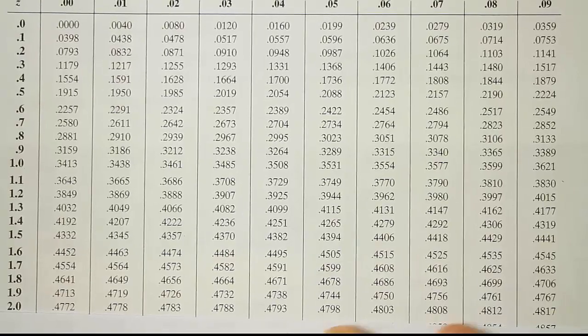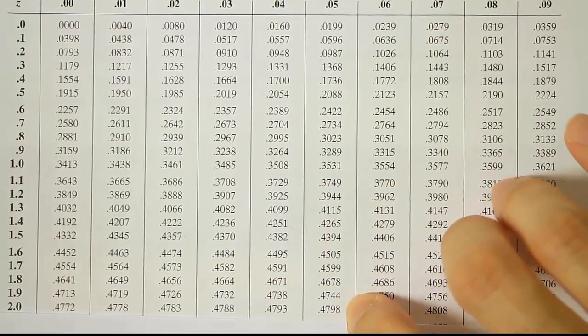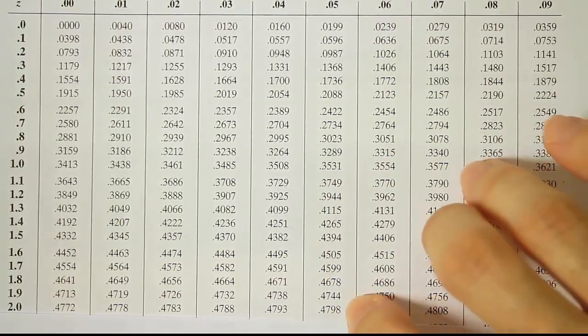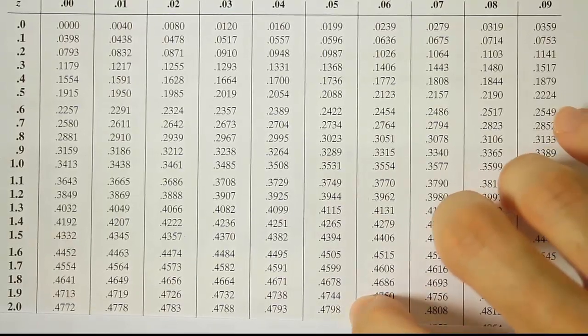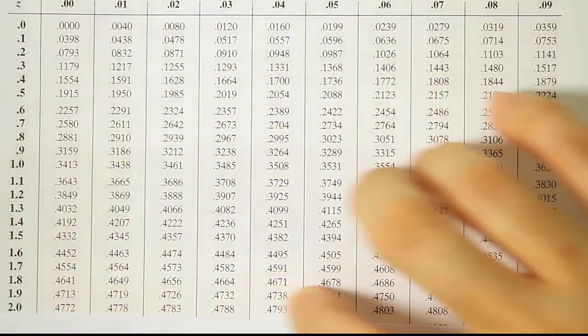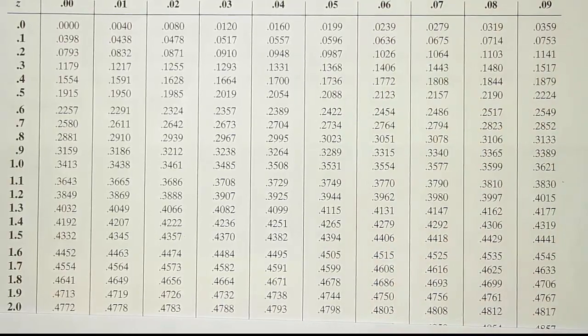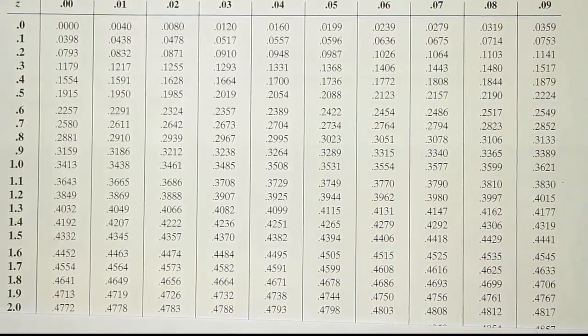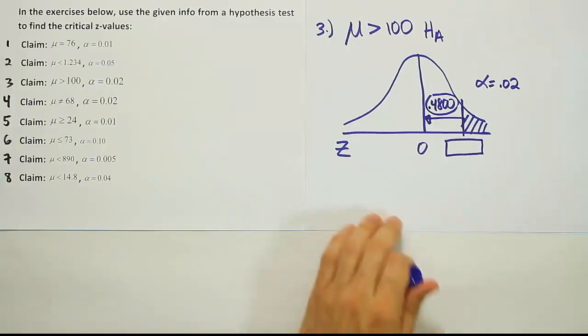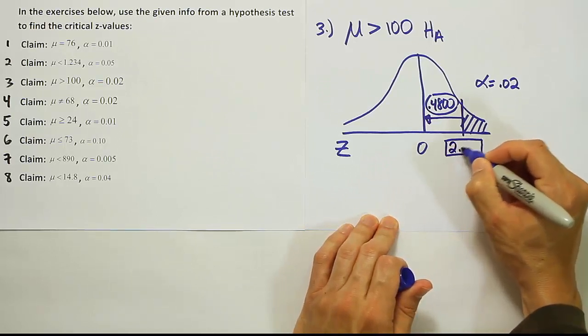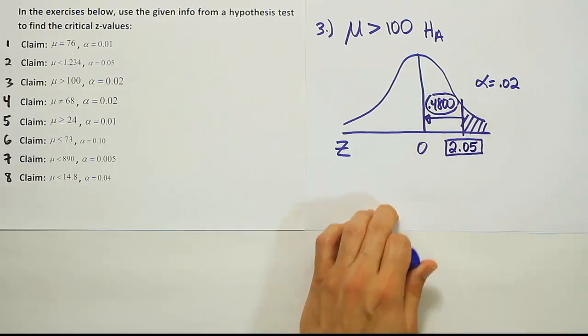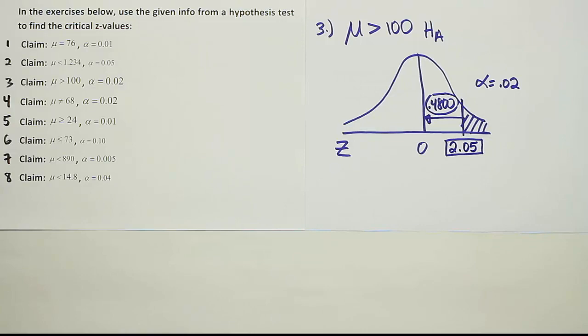When I look at that, I see that this number of 0.4798 is the closest between these two. This one's pretty close but that one's closer, so we find that the answer is 2.05. We find the answer to be 2.05 from the z-table. All right, that's it.